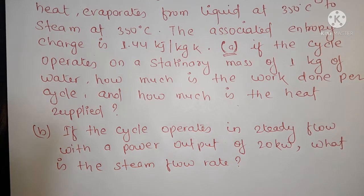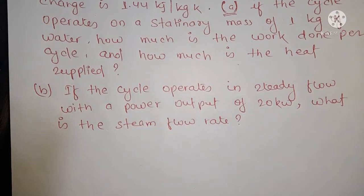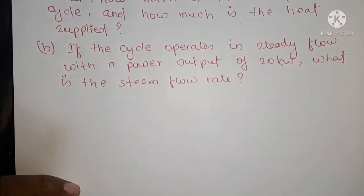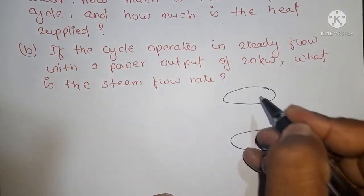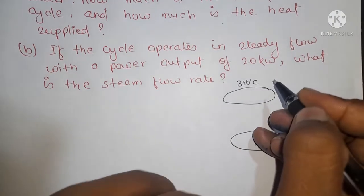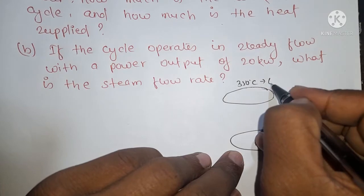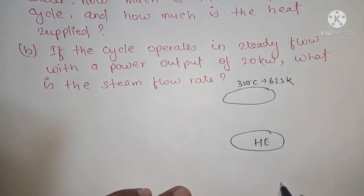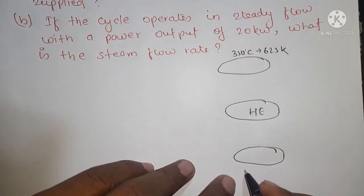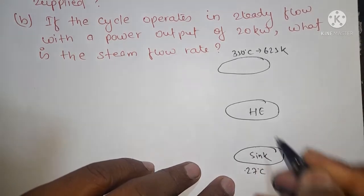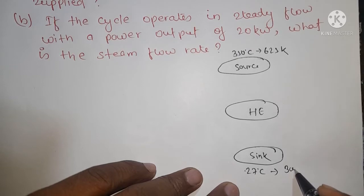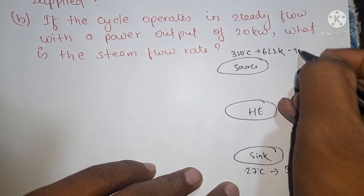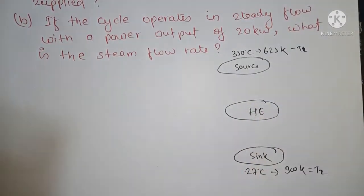Question bol raha hai ki ek Carnot cycle — Carnot cycle means reversible cycle jiski efficiency sabse zyada hoti hai. Ek heat engine hai, aur ek source hai jis ki temperature 350 degrees Celsius hai, jo 623 Kelvin hoga. Aur yahan par sink hai jis ki temperature 27 degrees Celsius hai, jo 300 Kelvin hoga. T1 = 623 K (source) aur T2 = 300 K (sink).